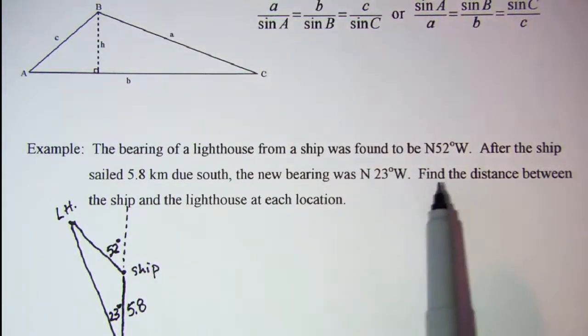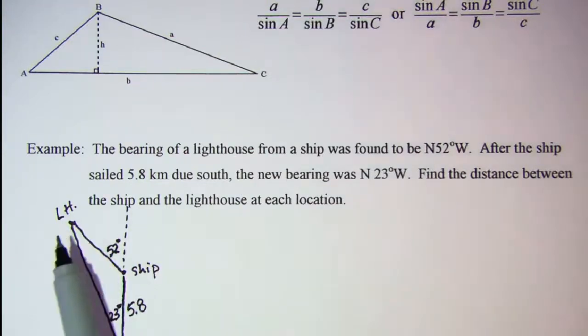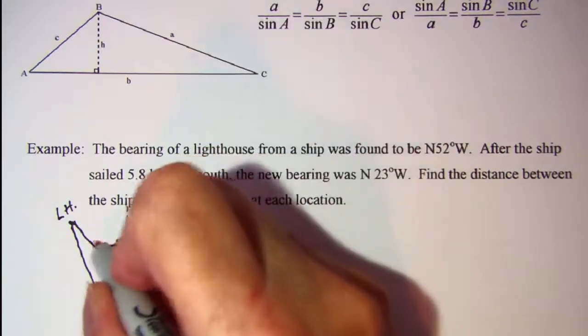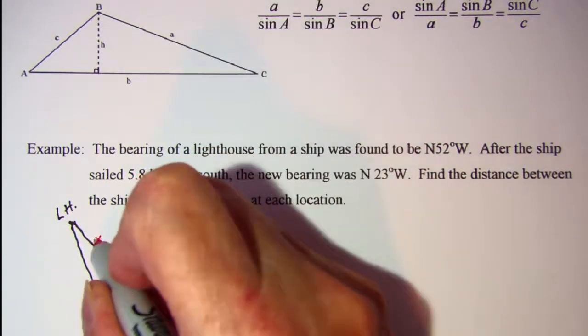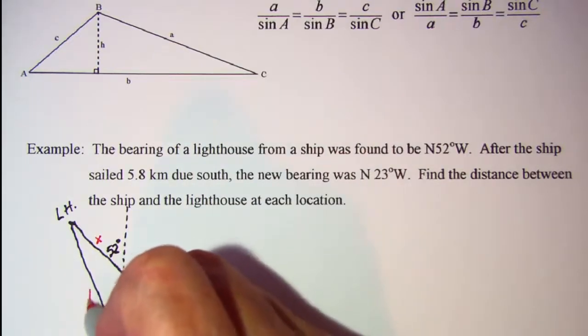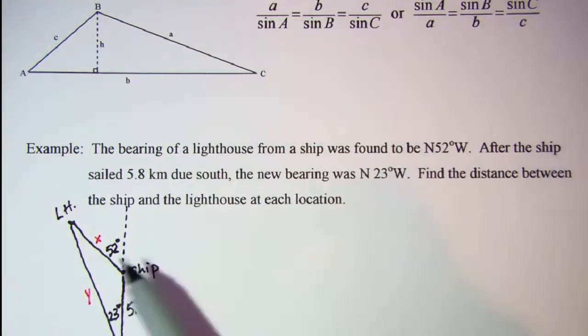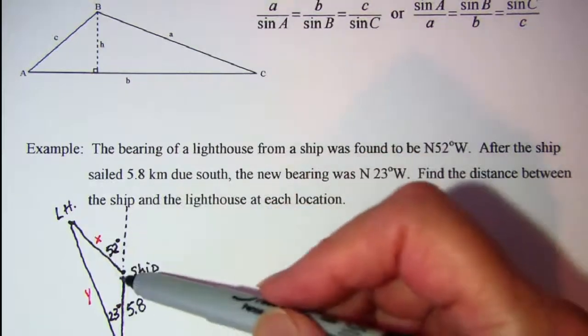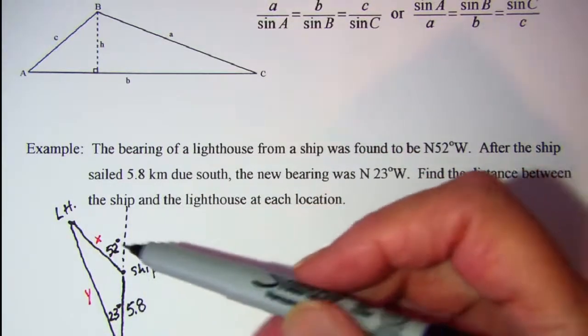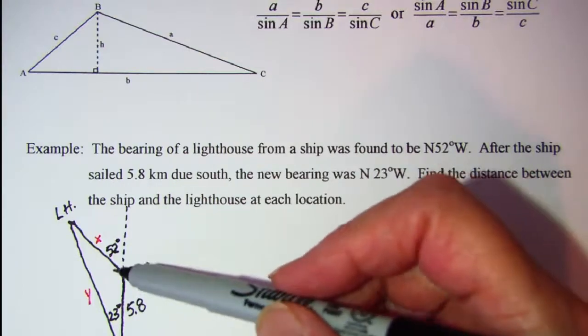And our question is, what is the distance between the ship and the lighthouse at each location? So we're wanting this distance, and we're wanting this distance. Let's call that Y. All right, so inside this oblique triangle, I need some more angles.